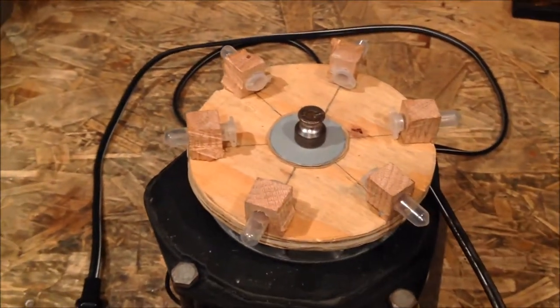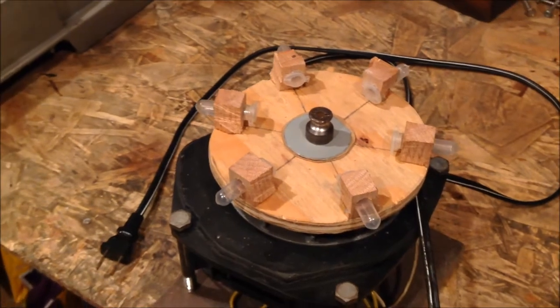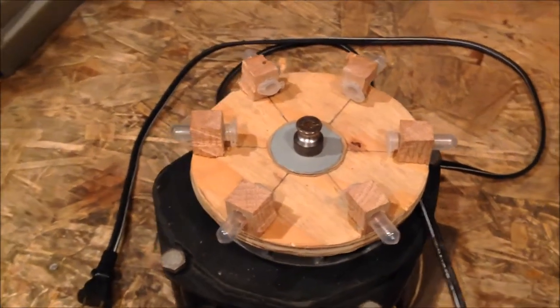To hold the centrifuge tubes, these are 2 milliliter variety, I made some custom wooden blocks with holes in them and then glued them at precisely 60 degrees apart all around the disc.